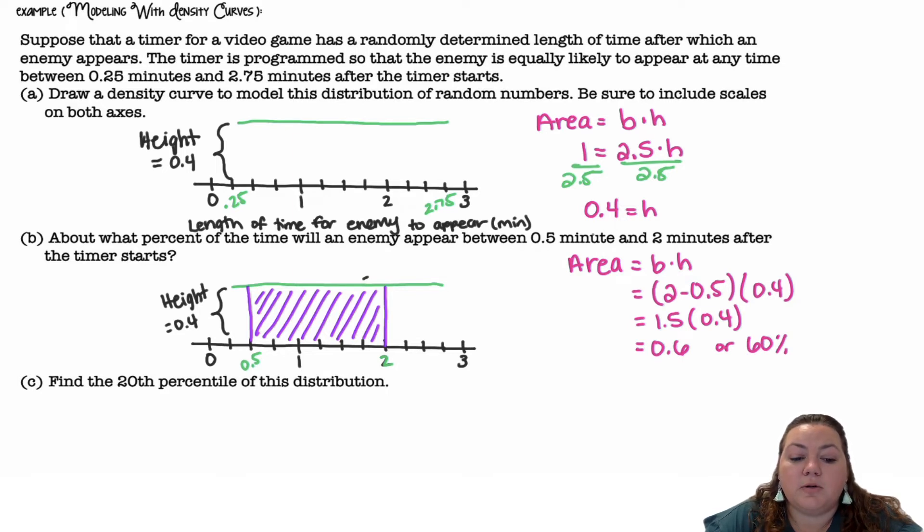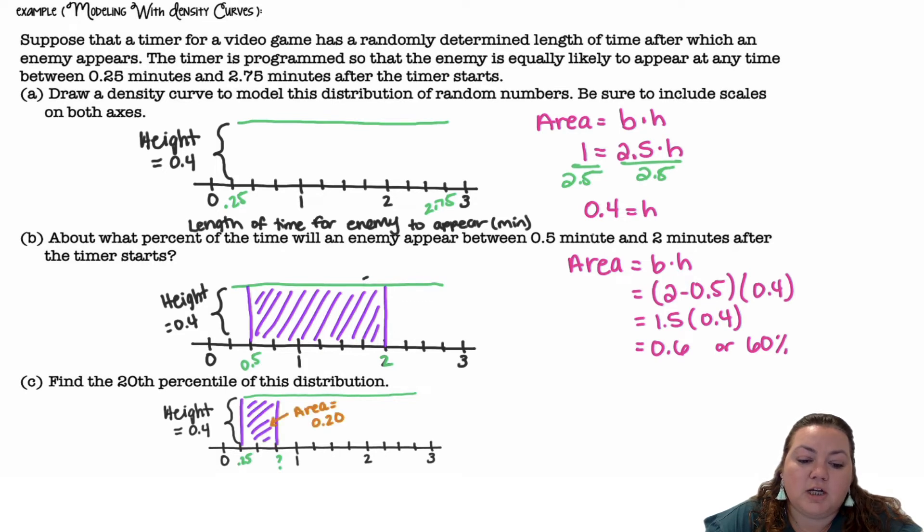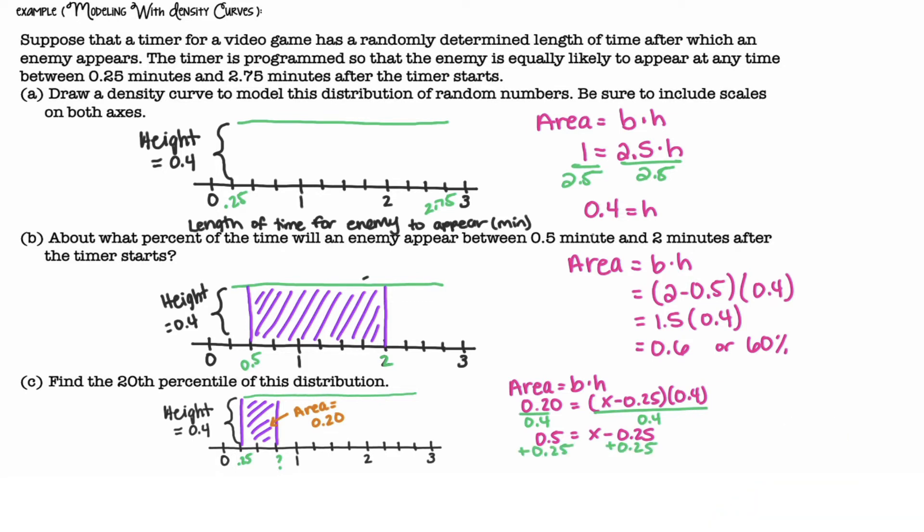Find the 20th percentile of this distribution. Well, the percentile is the percent of values that are less than that number. So I'm trying to figure out, like, I have 20% shaded. What is that number that it's going to, marked with a question mark? So I know that the area is going to be 0.2. I don't know what the base is, but I do know the height is 0.4. So the base is going to be some number minus 0.25. Now I've got to figure out what that number is. So I'm going to divide by 0.4 on both sides. And then I'm going to add 0.25 to get x by itself, and I get 0.75. So 0.75 minutes is where the 20th percentile lies.